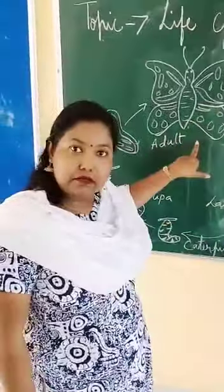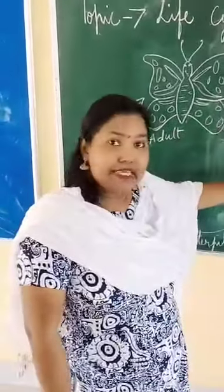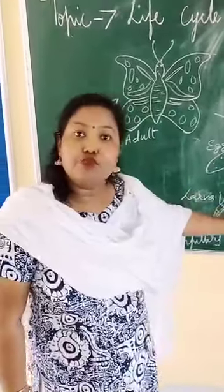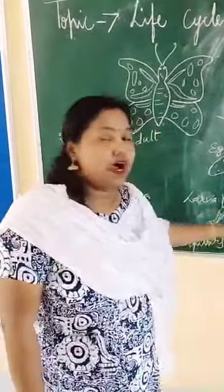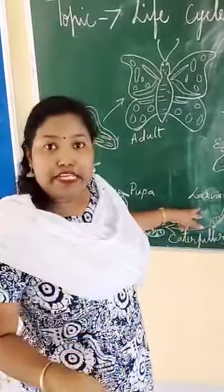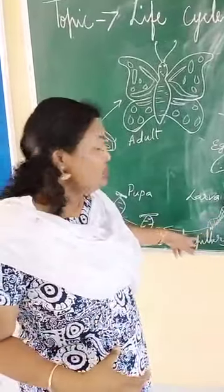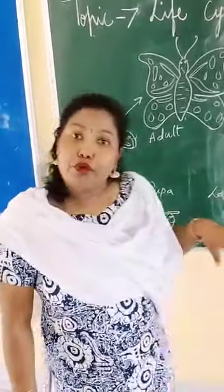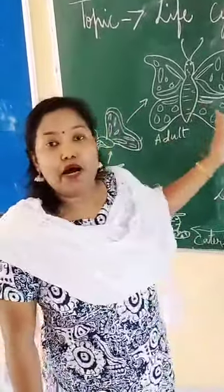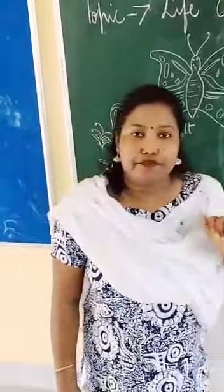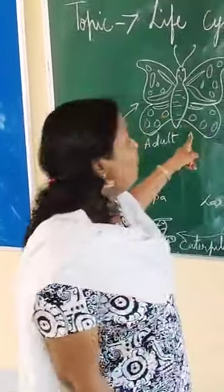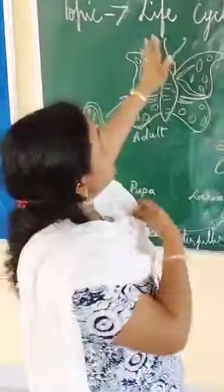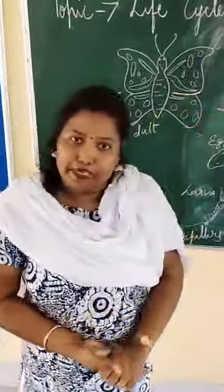Again, this adult butterfly lays eggs on leaves, and these eggs hatch into larva. These larvae feed on leaves, eat leaves, and grow into a caterpillar. And this caterpillar grows into pupa, and then this pupa grows into a butterfly. So this is the life cycle of a butterfly.